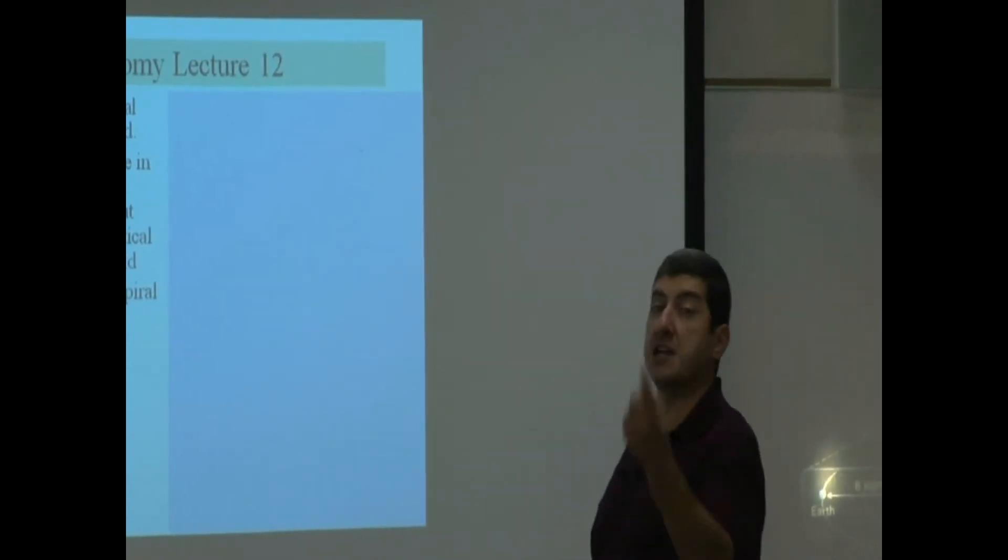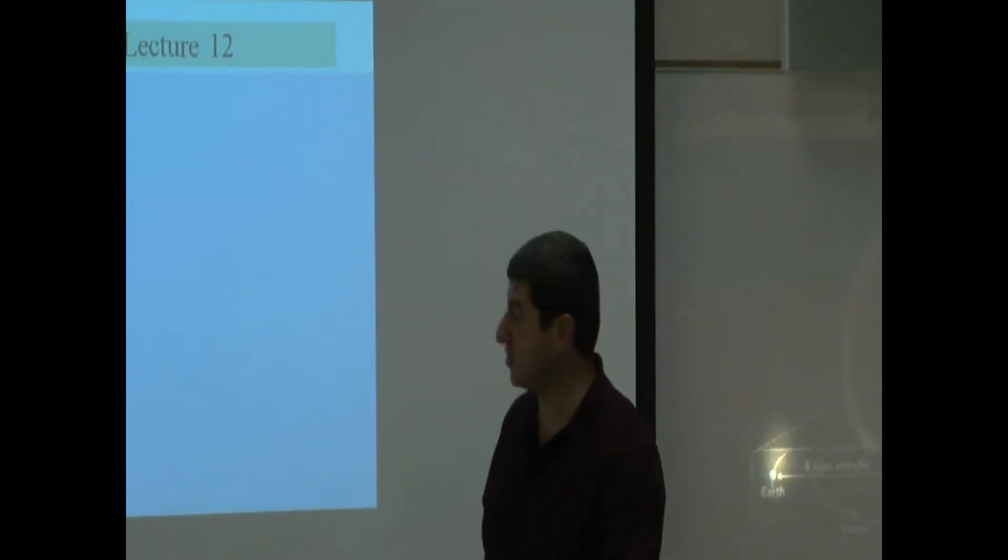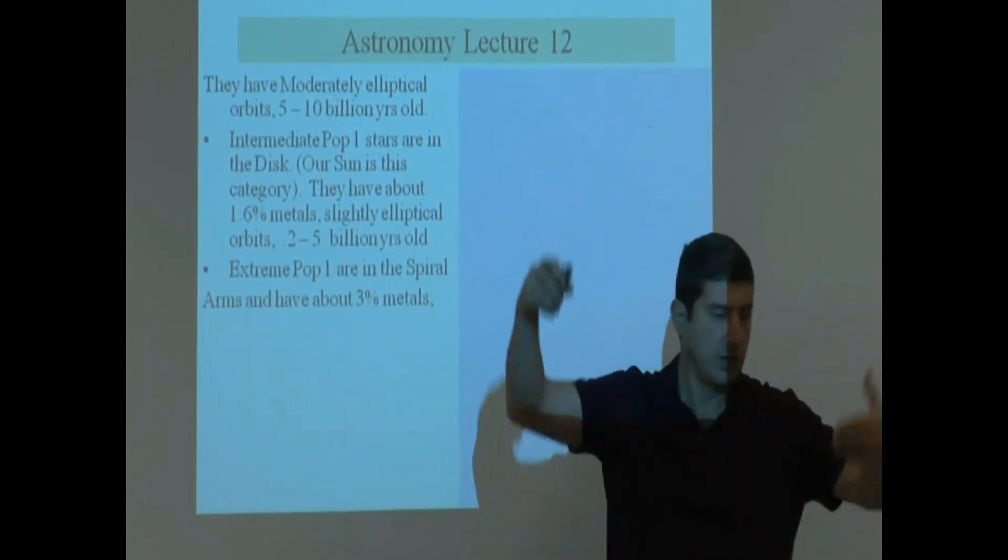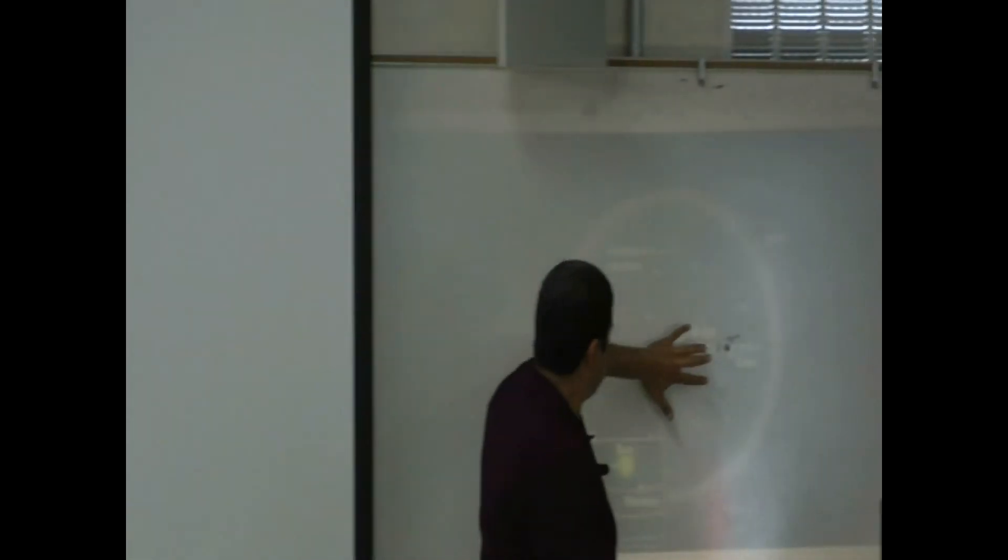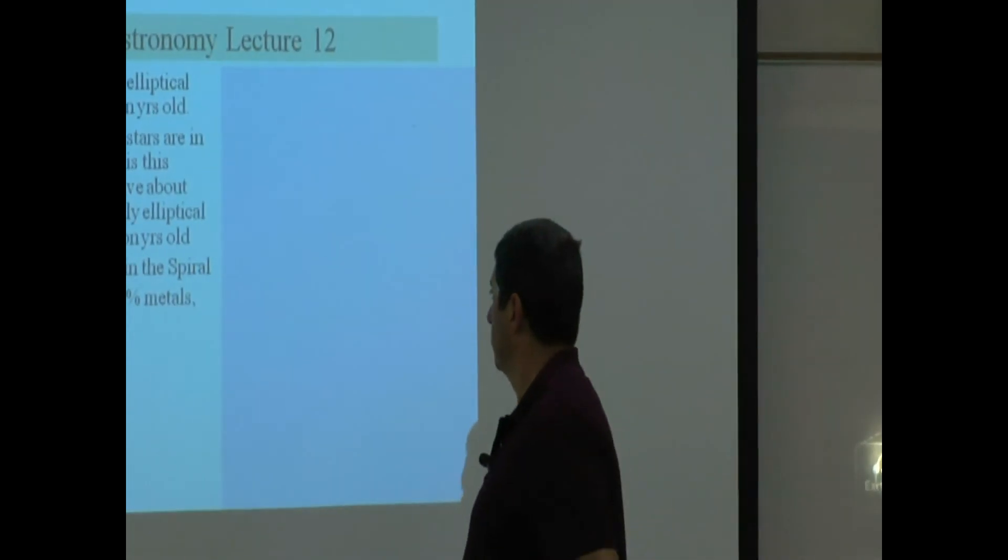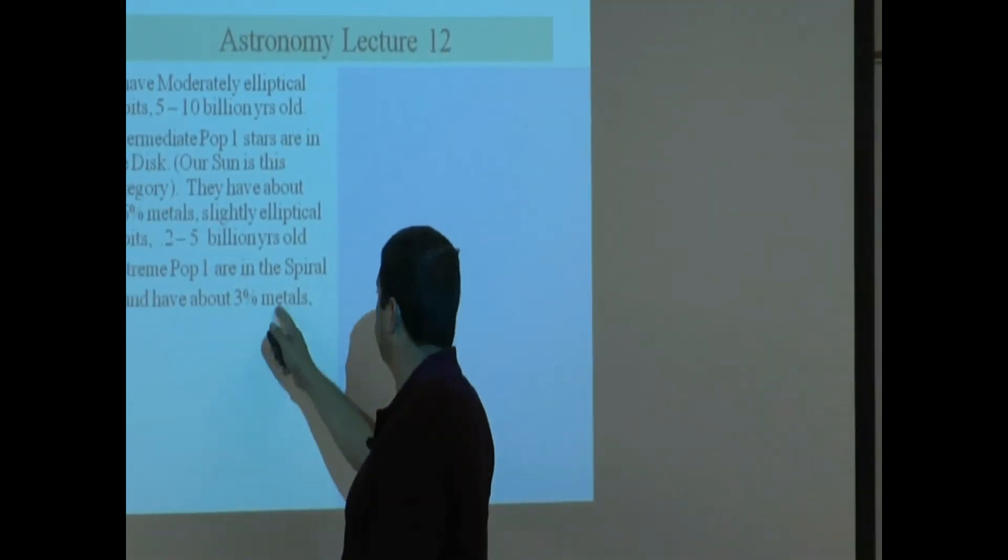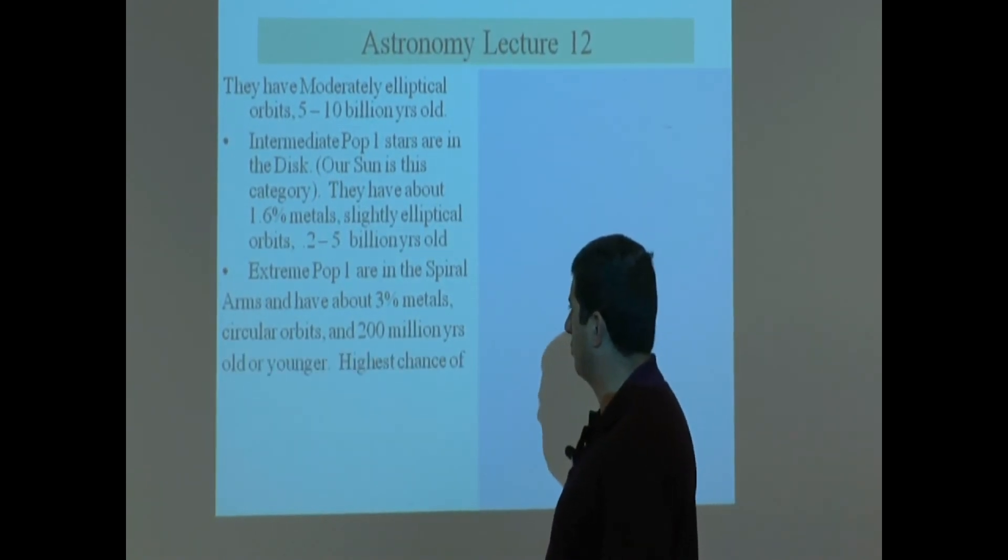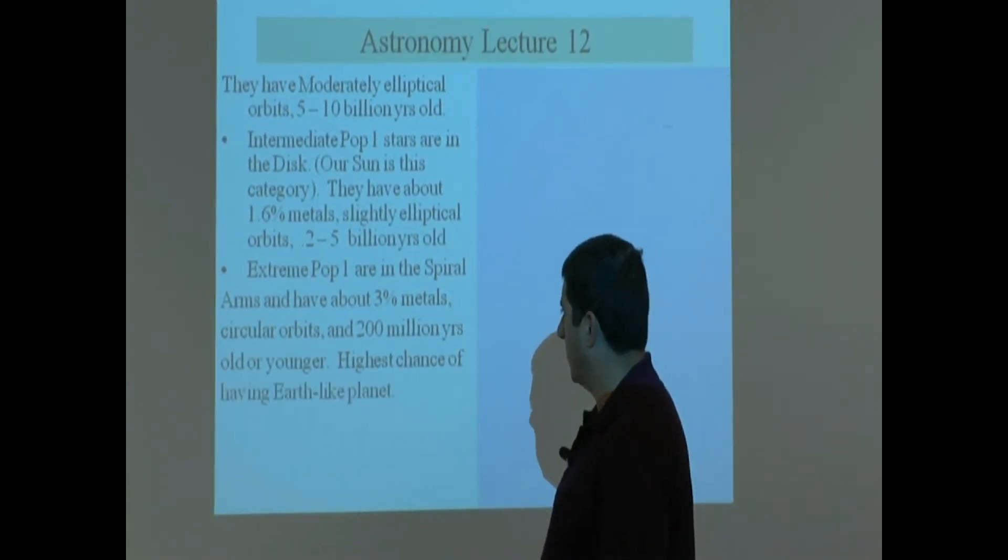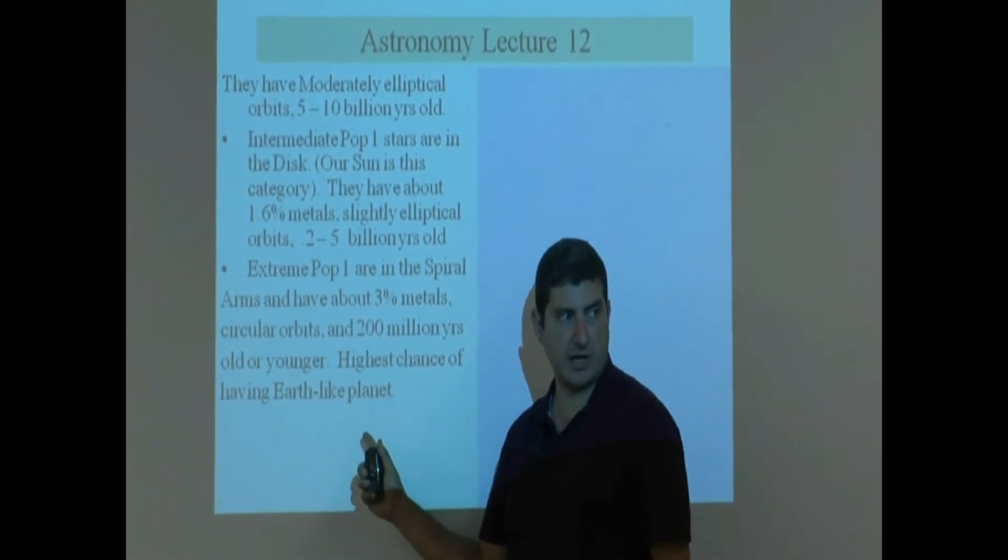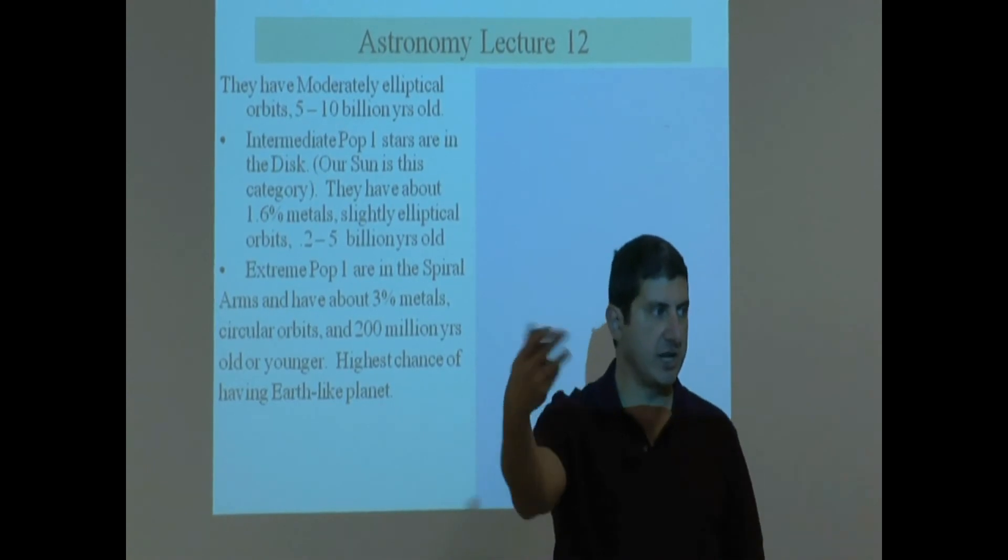Extreme Pop 1, they are even younger. They're the fourth generation of stars. They are in the spiral arms. So if we drew the face value and then we looked at the spiral arm, mostly the spiral arms have the youngest generation of stars. They have about 3% metals. They have circular orbits and they have 200 million years old or younger. Highest chance of having an Earth-like planet around it. Why? Because they're formed much later.